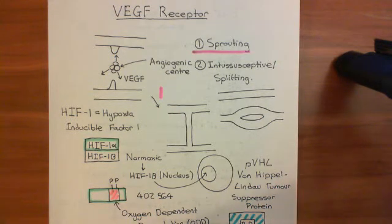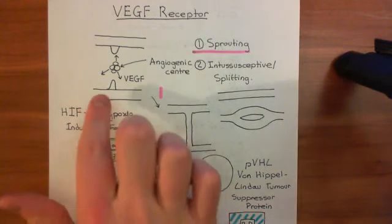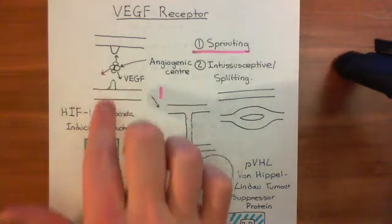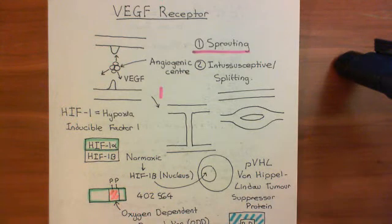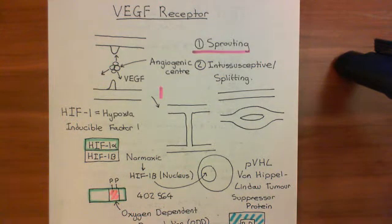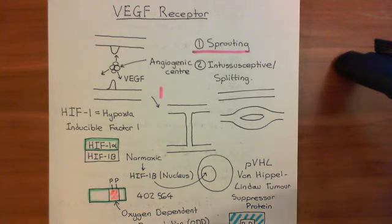It is these transcription factors, then, which produce the appropriate changes in the endothelial cells that you need in order to get this ordered process of angiogenesis occurring. So you can produce blood vessels which will supply the originally hypoxic area.